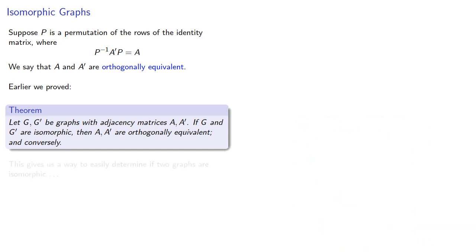This gives us a way to easily determine if two graphs are isomorphic, provided we can easily find the right permutation matrix. But this is a hard problem.